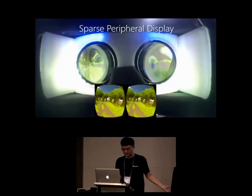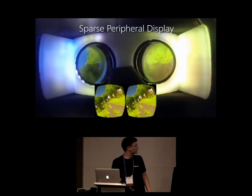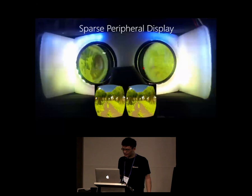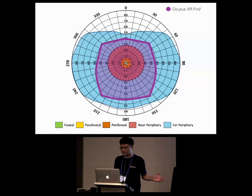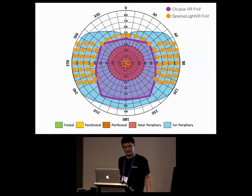Here's what that looks like in action. In this prototype, the rendering is all driven from an external computer and tracking is provided by an external tracking camera. The field of view of the Oculus VR is that purple box in the middle, and when augmented with our Sparse Light VR LEDs, the sparse peripheral LEDs cover a 170 degrees horizontal field of view.